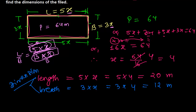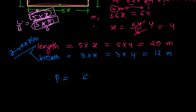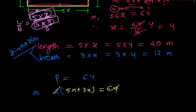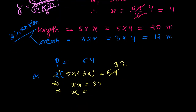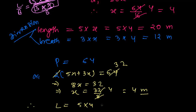You can also solve this directly using the perimeter formula: perimeter equals 2 times (length plus breadth). So 2 times (5X plus 3X) equals 64. That gives 2 times 8X equals 64, so 16X equals 64, and dividing both sides by 16 gives X equals 4. Therefore length is 5 times 4 equals 20 meters, and breadth is 3 times 4 equals 12 meters.